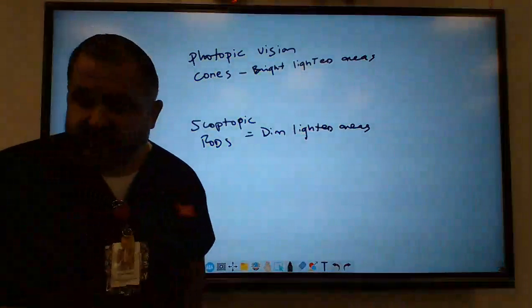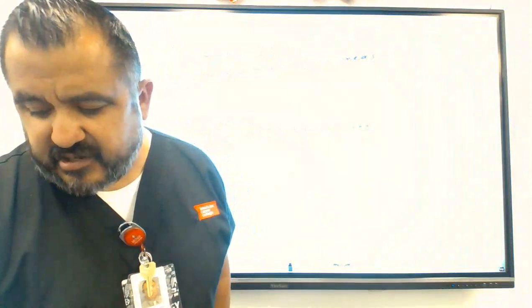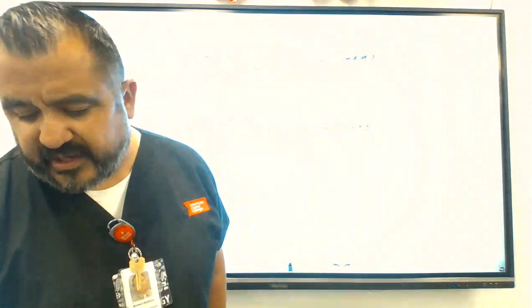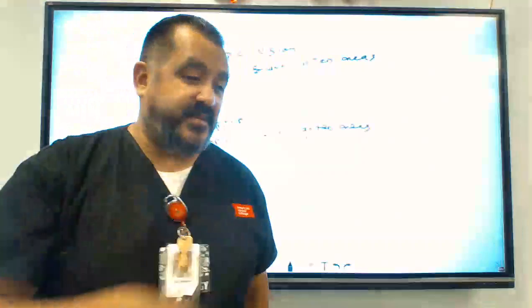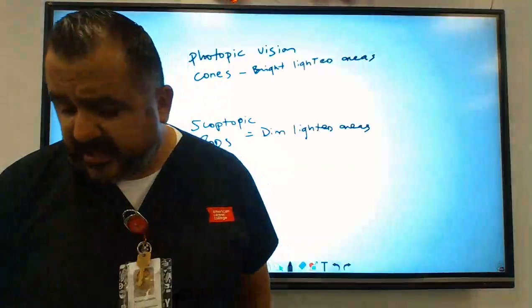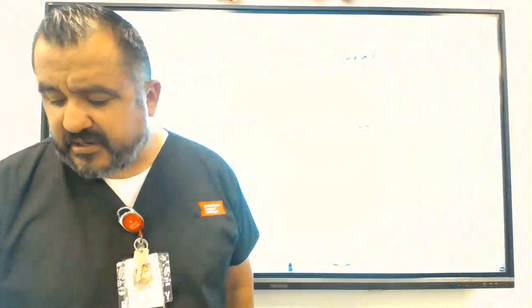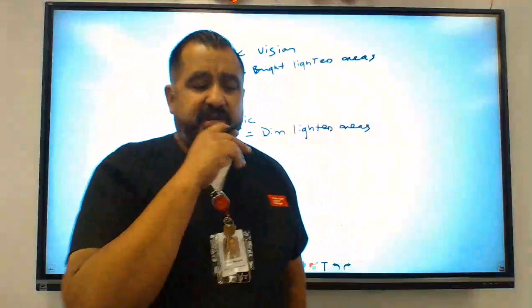But your fovea centralis, if you take a look here, is in the middle, right? And then here you have the pupil. You have the iris and the cornea. When you have cloudiness of the lens of the eye, that's known as cataracts. But that's something else. But if you take a look at these terms here, your perception of an object can change at certain distances.